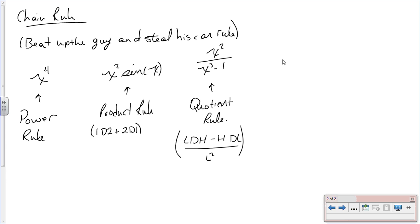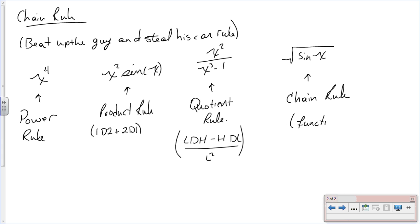But what happens if you have a function inside a function, such as the square root of the sine of x? For this you're going to use the chain rule. You use the chain rule when you have a function inside a function, and you're actually going to take the derivative multiple times of multiple things. Let's get into an example.